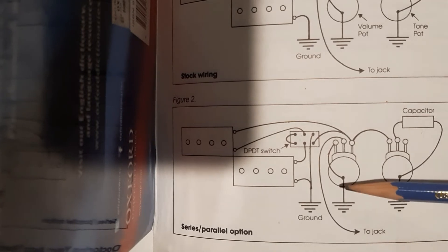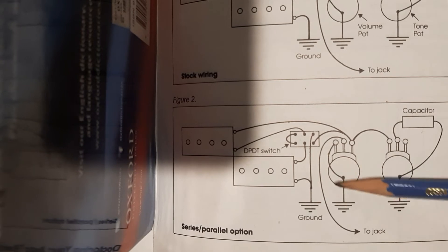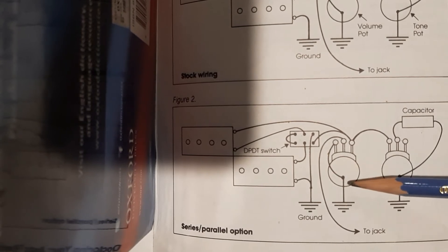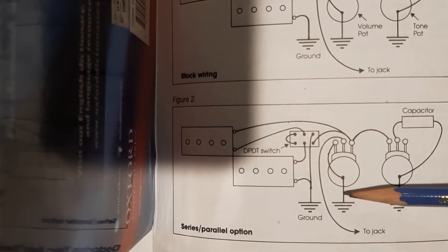On a single coil there's less resistance in the pot, it's a 250k pot typically. So more high end is going to get to ground on a single coil. That can be a good thing because sometimes they can have too much top end, and a 250k volume pot will actually tame some of the high end.